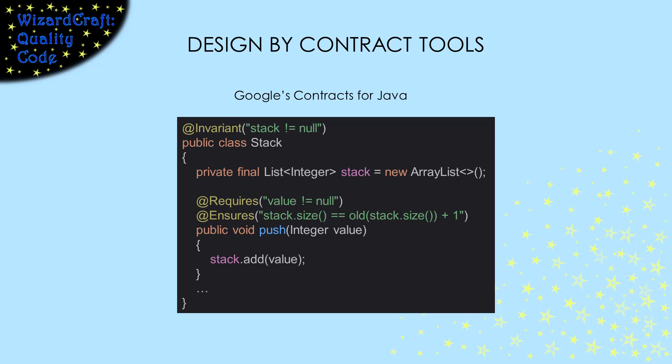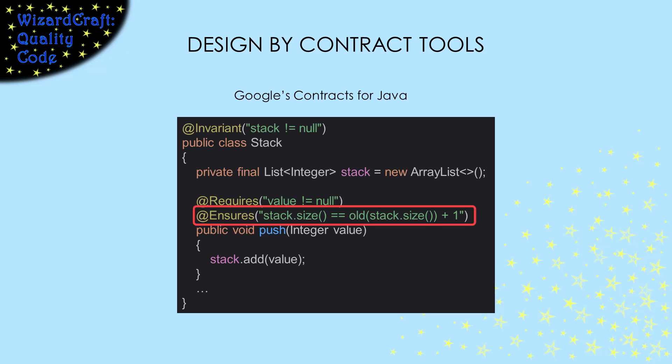There are also design-by-contract frameworks that let you explicitly code invariants and pre- and post-conditions. This example is from Google's Contracts for Java package. It has annotations that let you specify invariants, preconditions, and post-conditions. It also includes some keywords that help with encoding your conditions. For example, in a post-condition, 'old' means the value at the beginning of the method, so this @Ensures annotation is checking that the size of the stack has grown by one. If any of the requirements are not met, the code will throw an illegal state exception. There's also the capability to turn them on and off with a configuration file.